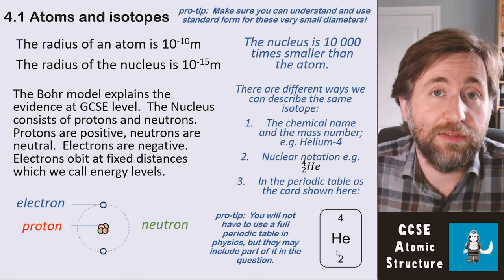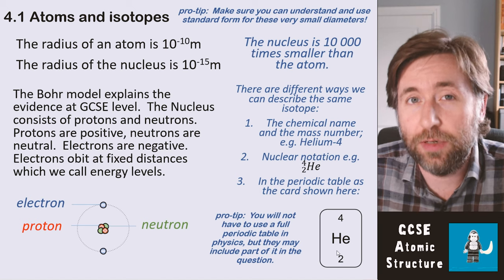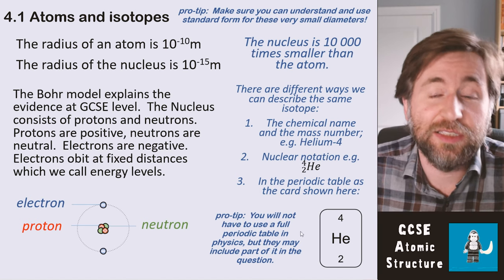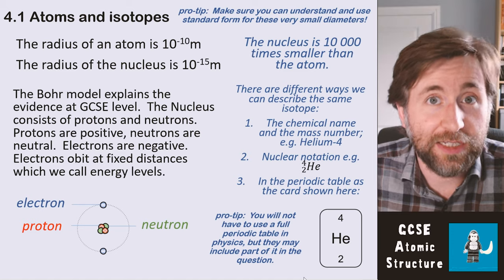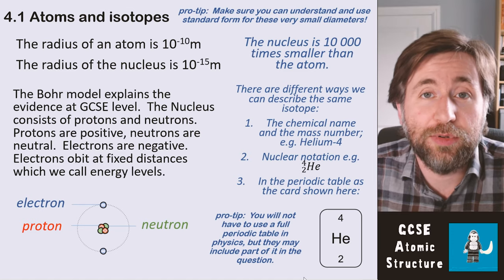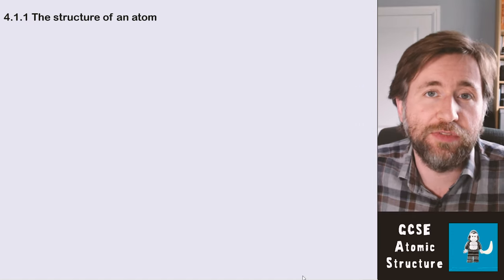You don't need to use a full periodic table in physics—you do in chemistry but you don't in physics. But they may give you part of it. They may say here's a part of the periodic table, or here's the card from that isotope in the periodic table. There's one more really important bit of information about the structure of the atom.